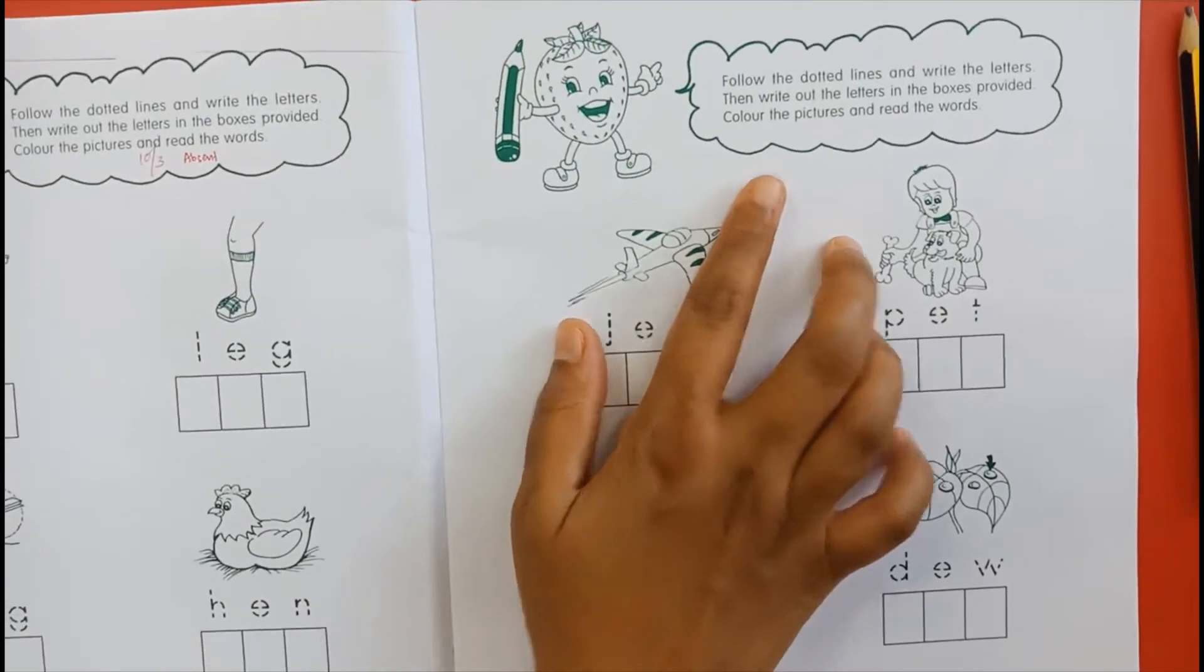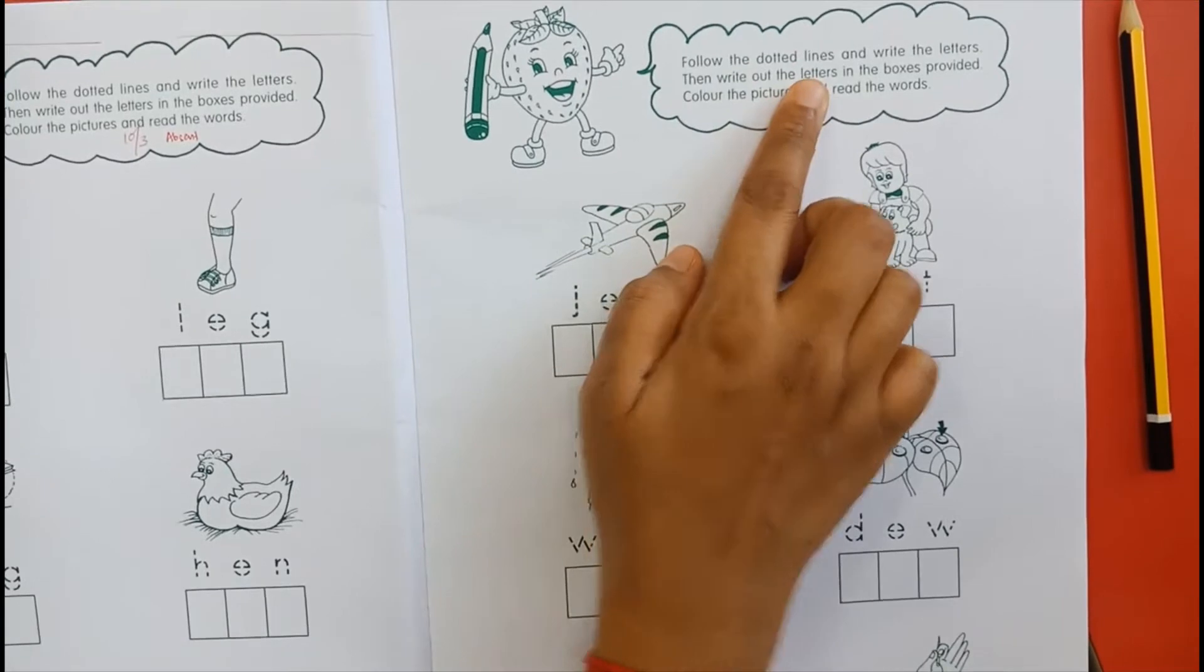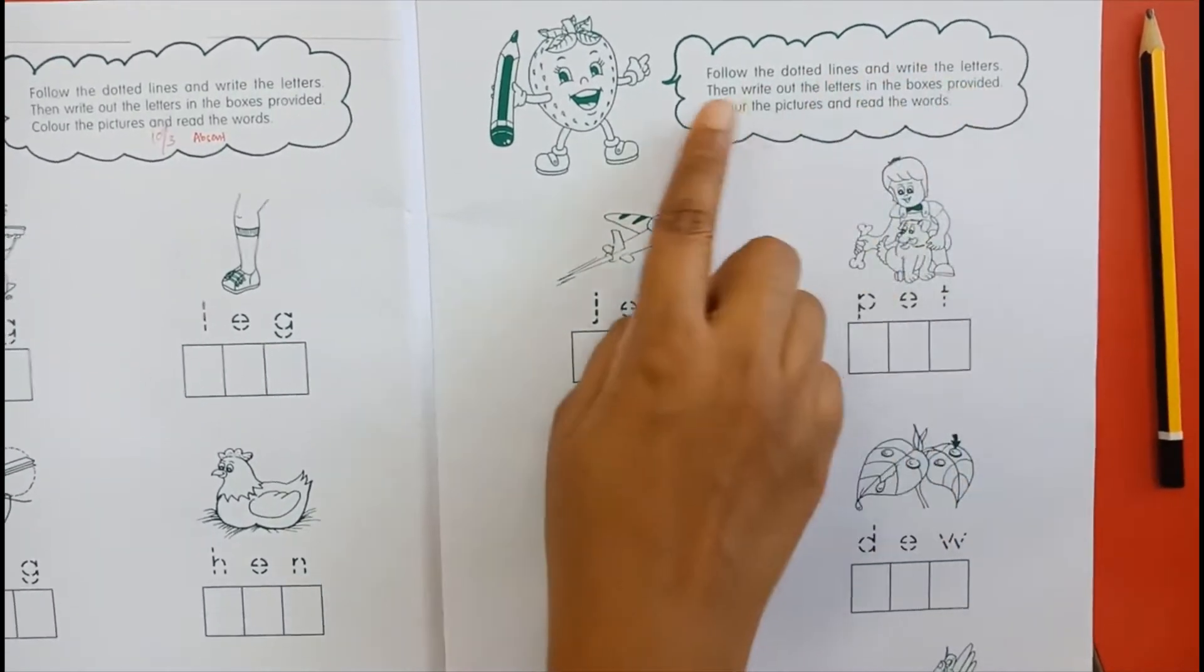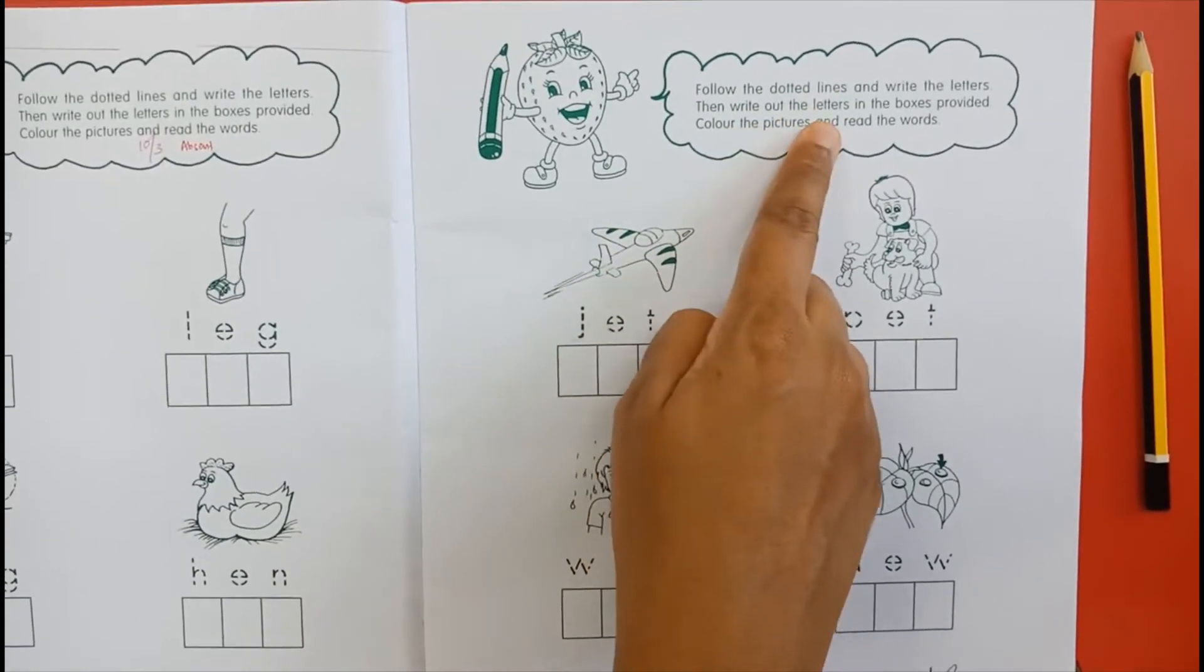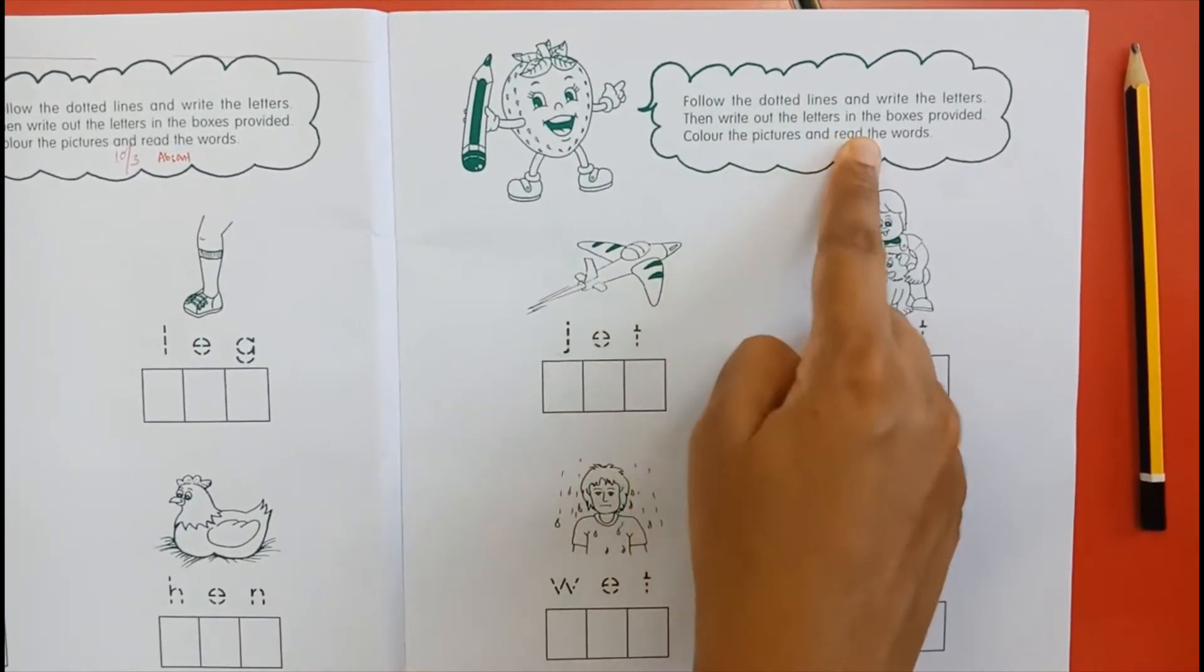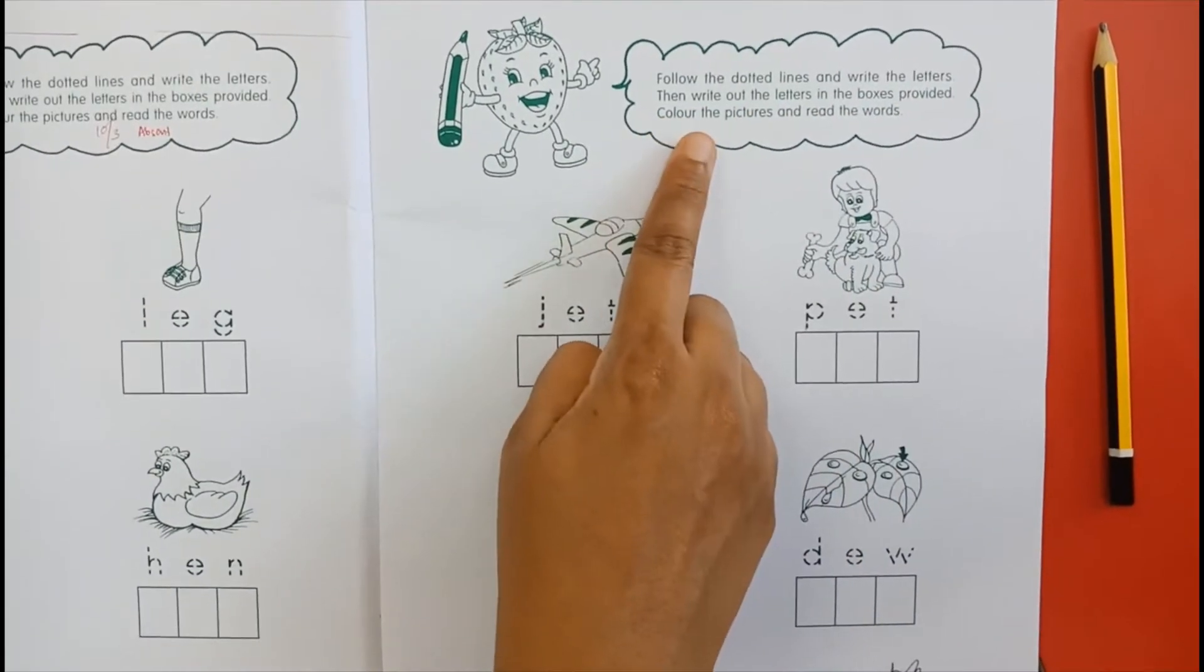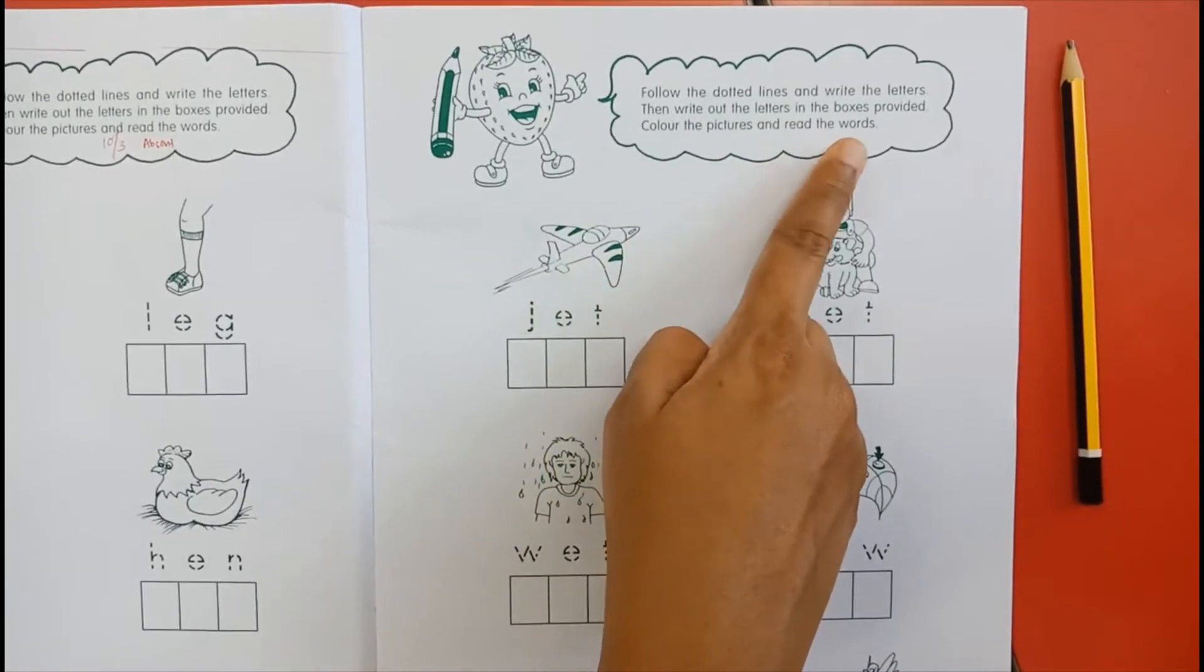Children, let me read. Follow the dotted lines and write the letters. Then write out the letters in the boxes provided. Color the pictures and read the words.